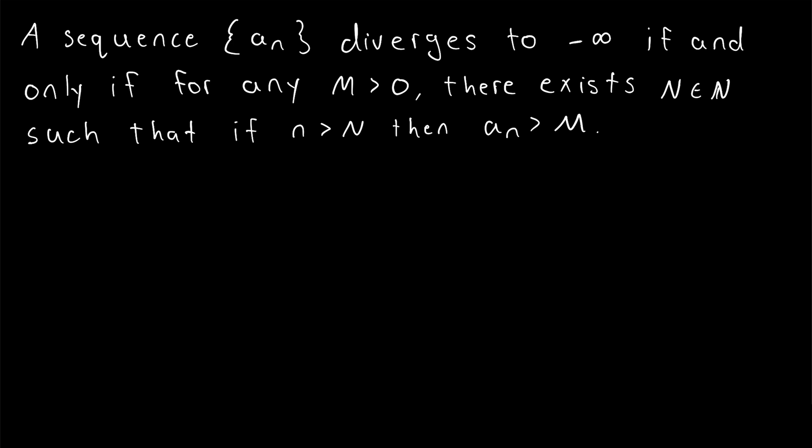We would change the plus to a minus in front of infinity. We would change M greater than 0 to M less than 0. And we would change a_n greater than M to a_n less than M.